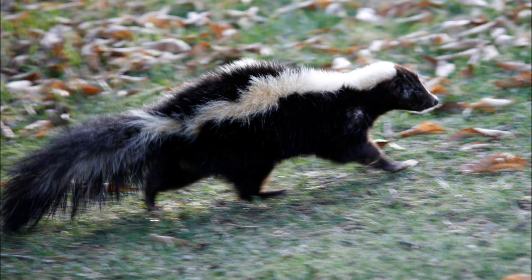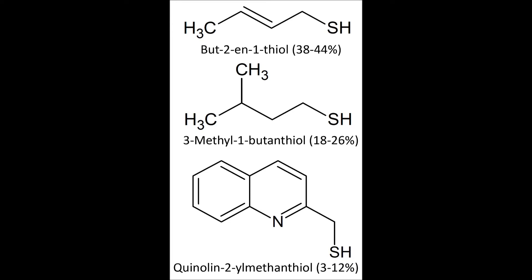The two main components of skunk spray are thiols and thioacetates. Thiols are by far the most abundant in skunk spray. Thiols come from the Greek word 'theoin' for sulfur. These are the most commonly associated thing with skunks because thiols are smelled by humans in parts per million. The most known thiols in skunks are C4H8S and C5H12S.